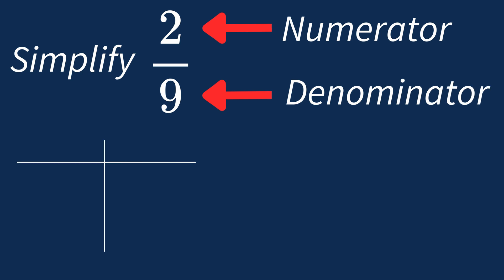First, let's list out the factors for each. For 2, the factors are 1 and 2. For 9, the factors are 1, 3 and 9.